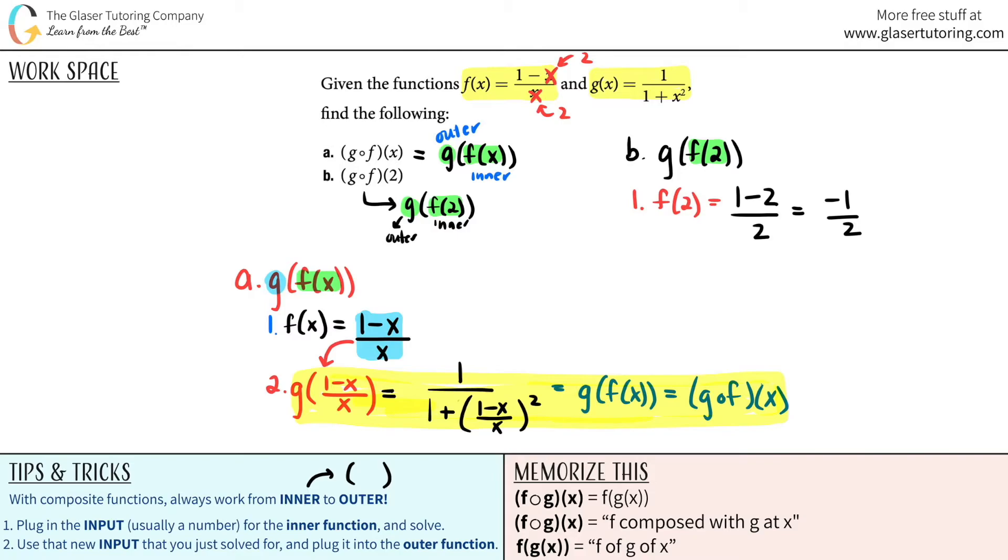Okay. Now I use this output, this answer, and use it as my input for the outer function which was g. So number 2, I'm going to say g of negative 1 half. And wherever there was an x value, there was only one here, you're going to plug in a negative 1 half. You see why we like numbers? It's easier because then we can just solve it.